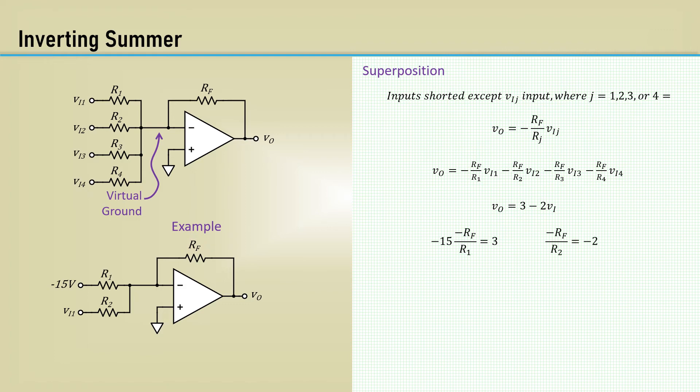Let Rf equals 3k. Then we arrange and solve for R1 as 15k. And finally, rearrange to solve for R2, which is 1.5k.